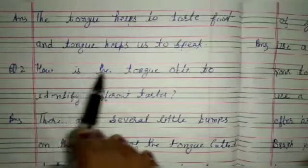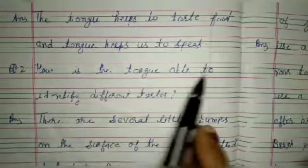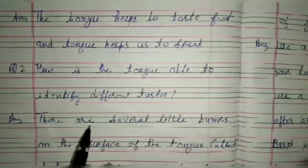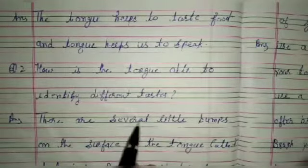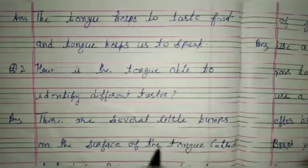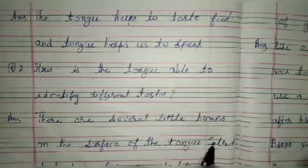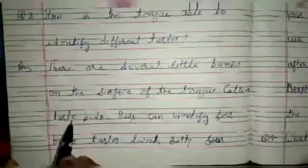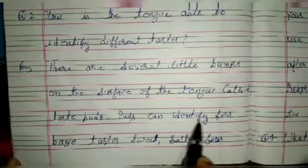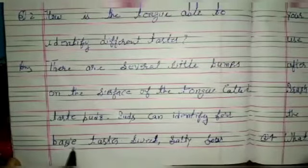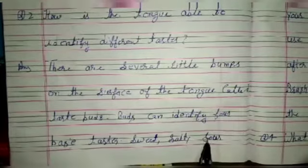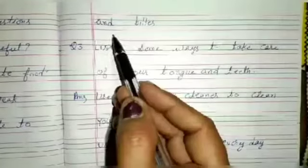Next question is how is the tongue able to identify different tastes? There are several little bumps on the surface of the tongue called taste buds. Taste buds can identify four basic tastes: sweet, salty, and bitter.